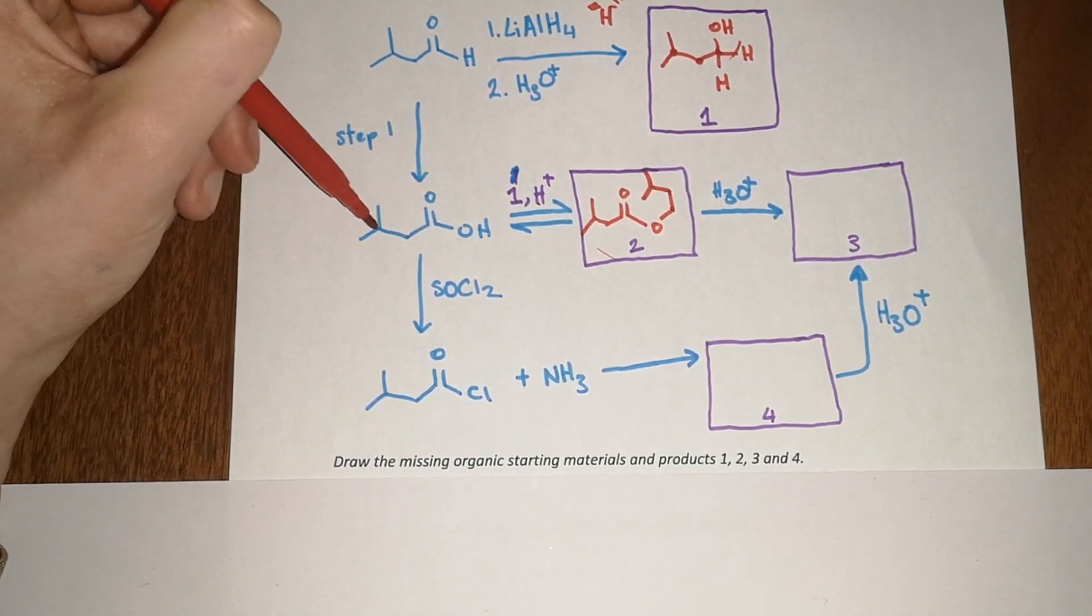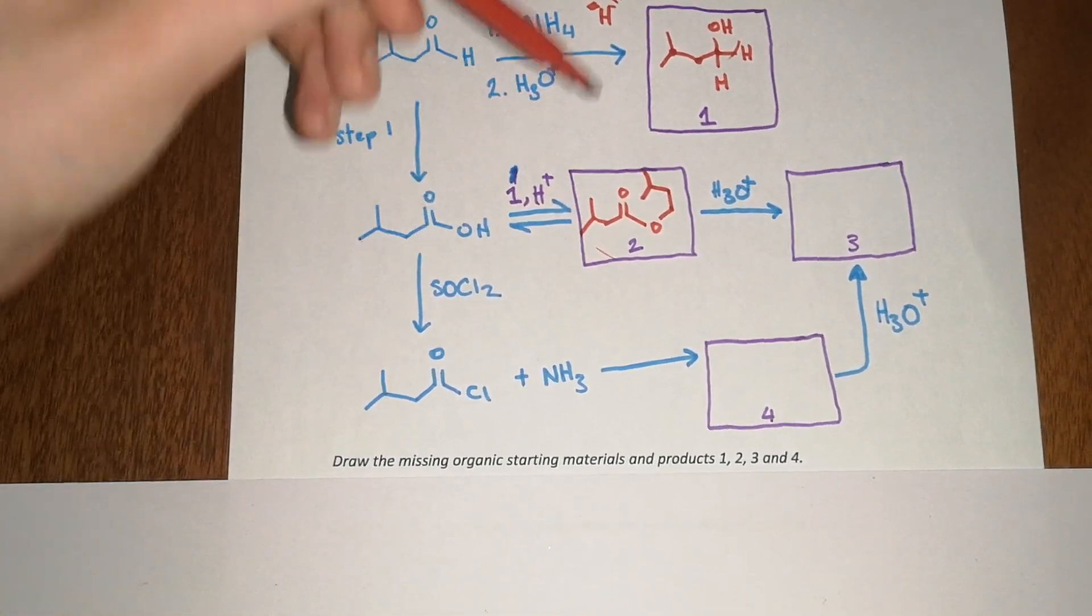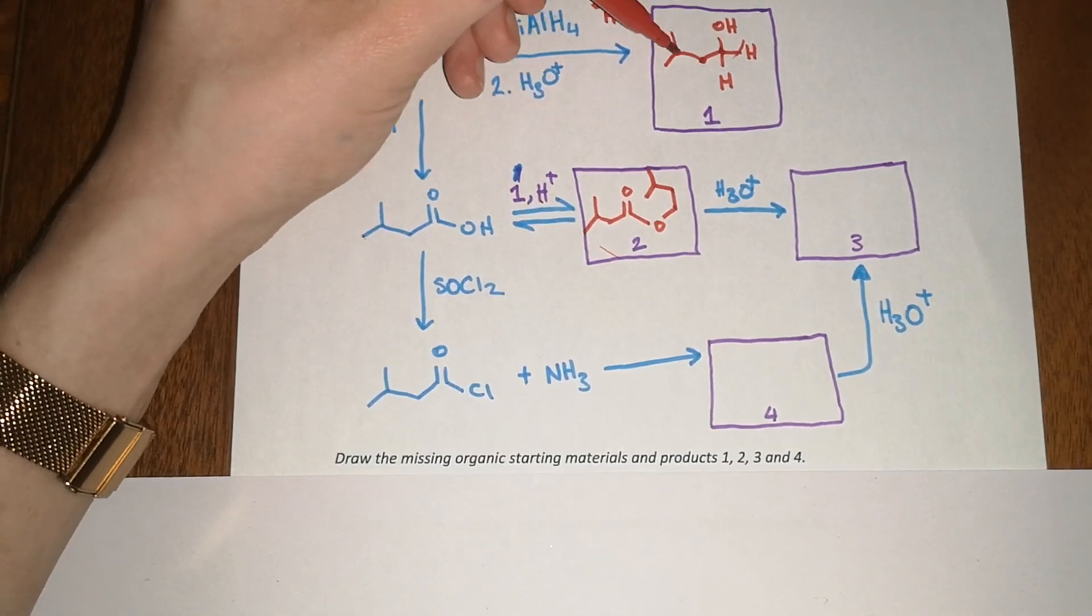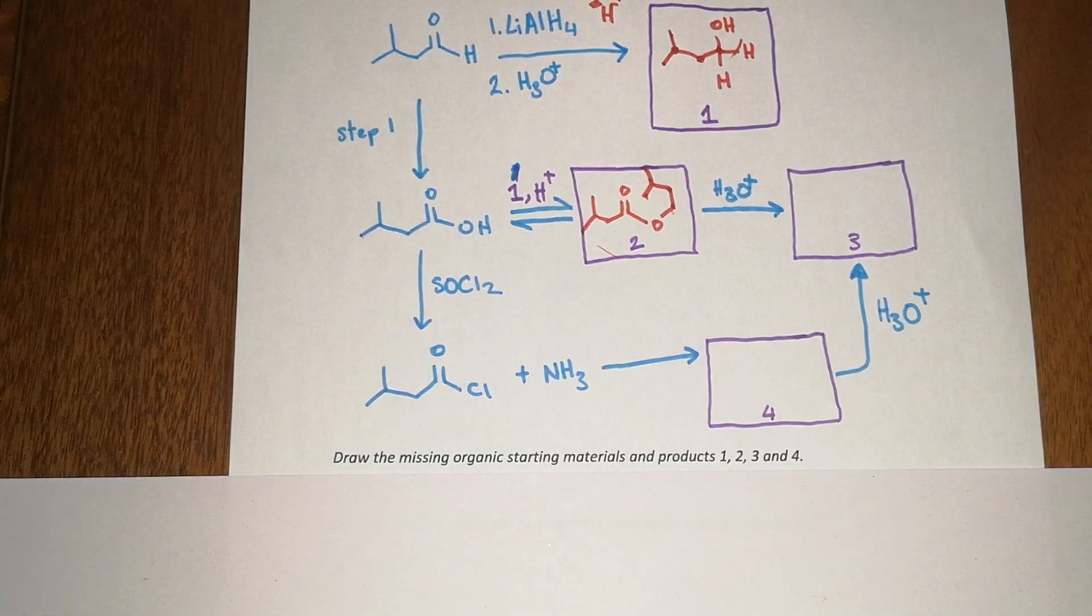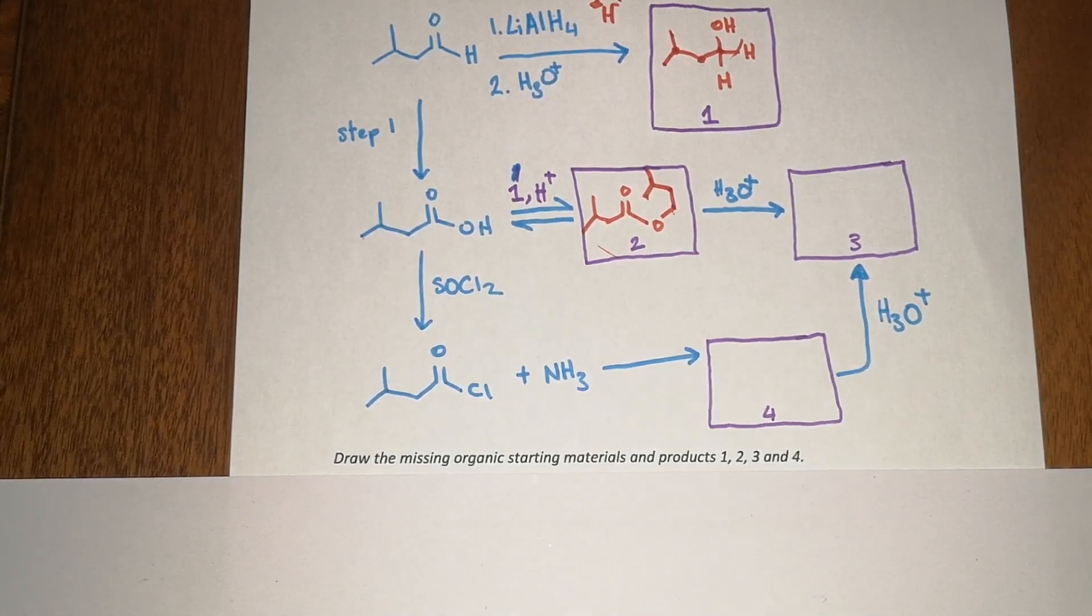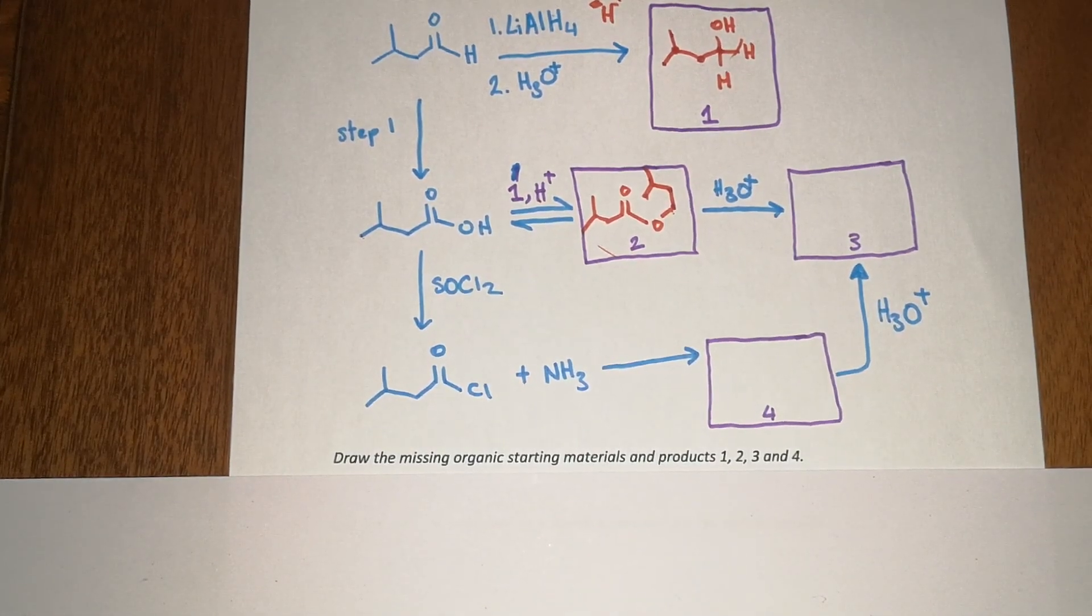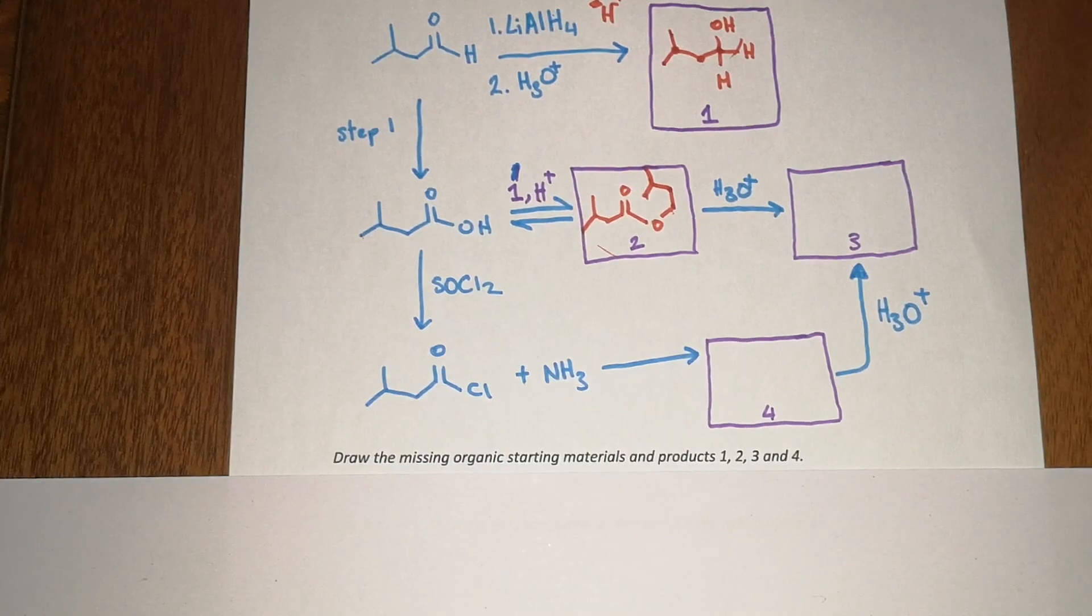It's essential to count all of the carbons. So for here you have one, two, three, four carbons. One, two, three, four carbons. And this one: one, two, three, four, five. One, two, three, four, five. That's just really important. It's unbelievable how many people will make that mistake and they'll lose a significant number of the marks because you've drawn the product wrong.